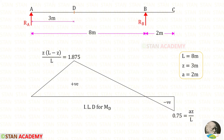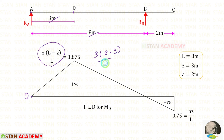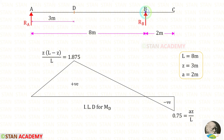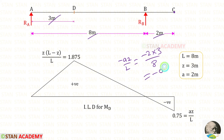Now let us draw the ILD for MD (bending moment at D). At point A, the ordinate will be 0. At point D, the ordinate is C times (L minus C) upon L — C is 3 and L is 8, so 3 times (8 minus 3) upon 8 = 1.875. At point B the ordinate is 0. At point C the ordinate is minus AZ upon L — A is 2, Z is 3, and L is 8 — giving minus 0.75.